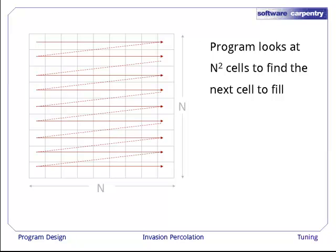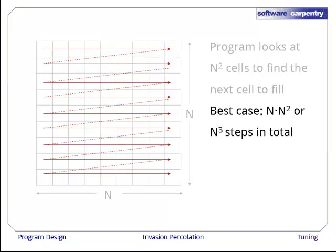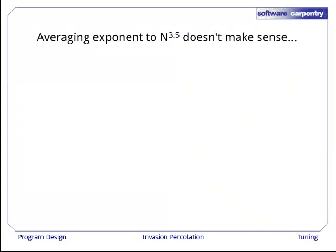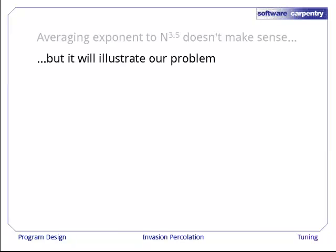Our program has to look at n squared cells each time it wants to find the next cell to fill. Right now, we sweep over x equals 0 to range n and y equals 0 to range n. The product of those two is n squared. So the best case filling time is n times n squared or n cubed steps in total. The worst case filling time is n squared times n squared or n to the fourth steps in total. That's bad news. Averaging the exponents of n cubed and n to the fourth to get n to the 3.5 doesn't make a lot of sense, but it will illustrate our problem.